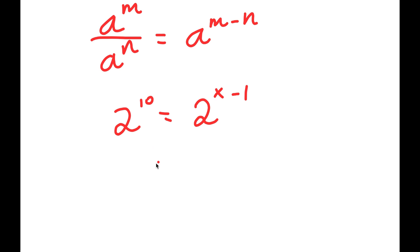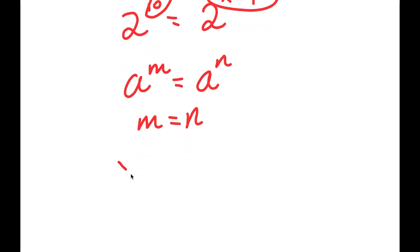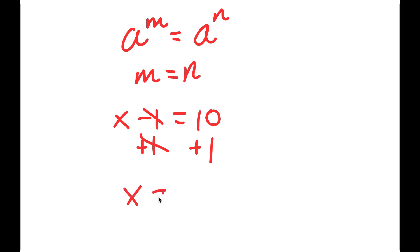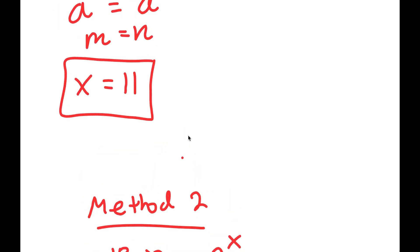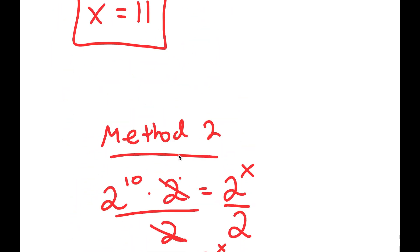Again, if I have a to the power of m equal to a to the power of n, then m equals n. So in this case, 10 is equal to x minus 1, or x minus 1 is equal to 10. Adding 1 on both sides, these cancel out and I get x is equal to 10 plus 1, which is 11. As you can see, method 1 is actually much simpler — it only took a couple of steps compared to method 2.